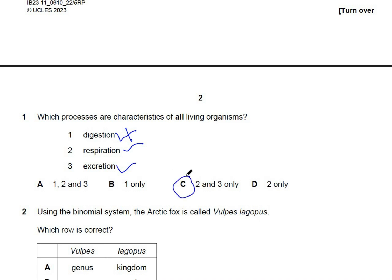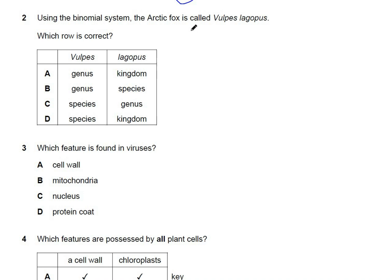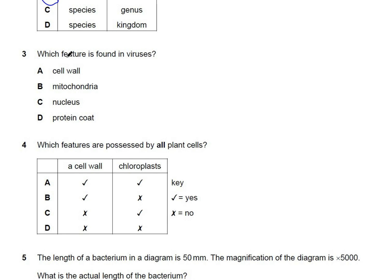Question 2: using the binomial system, the arctic fox is called Vulpes lagopus. Which row is correct? Always remember the first part of the name is the genus and the second part is the species. The answer to this question is B.